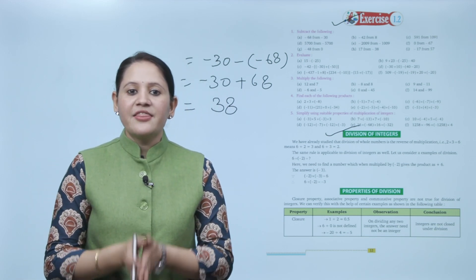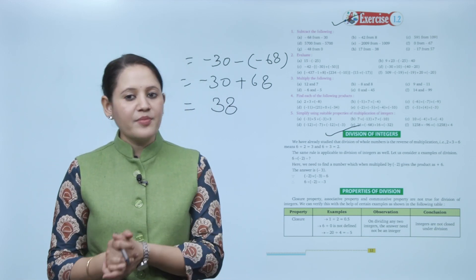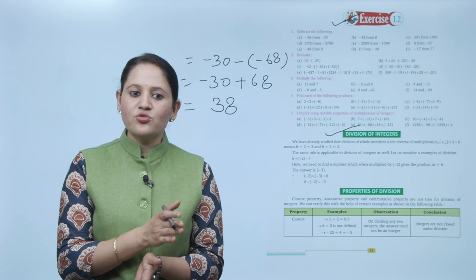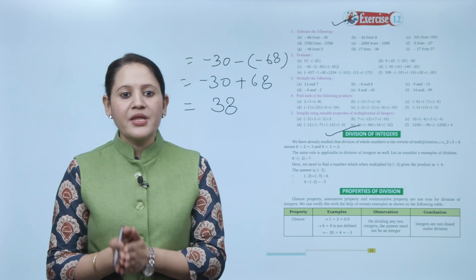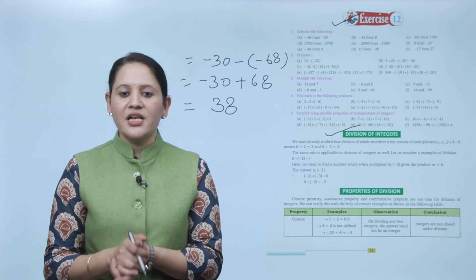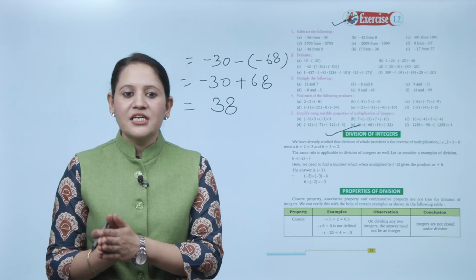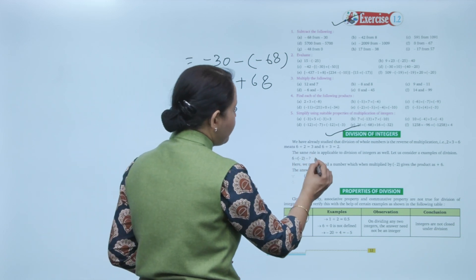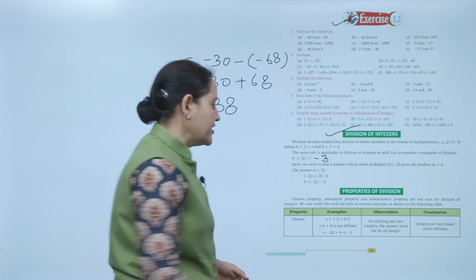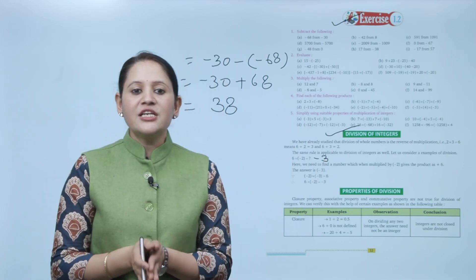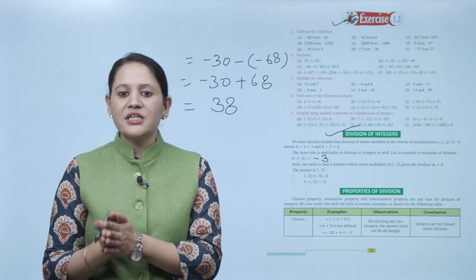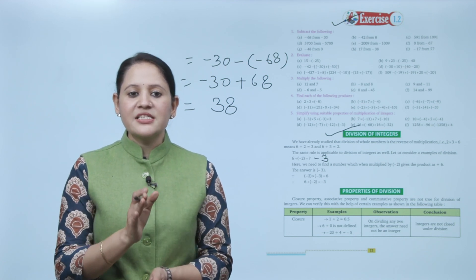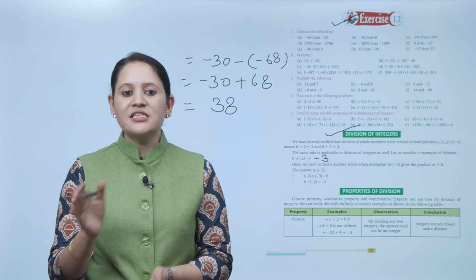We have already studied that division of whole numbers is the reverse of multiplication. For example, 2 multiplied by 3 equals 6, so 6 divided by 2 equals 3 and 6 divided by 3 equals 2. The same rule is applicable for the division of integers. Consider: 6 divided by minus 2 equals minus 3, which is also an integer. We need to find the number which when multiplied by minus 2 gives plus 6 — the answer is minus 3, since minus 2 times minus 3 gives 6.